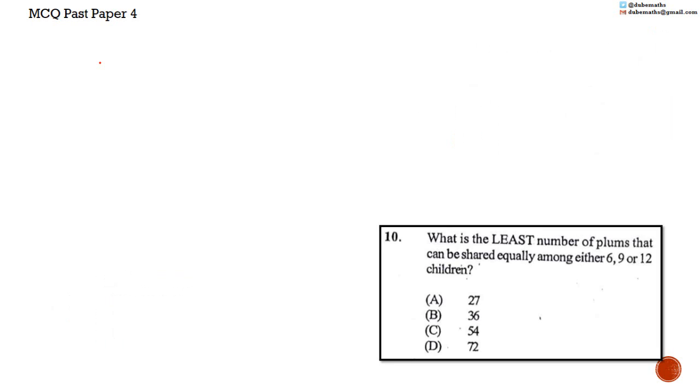Number 10. What is the least number of plums that can be shared equally among either 6, 9 or 12 children? It may not be obvious, but this question is asking for the LCM, the lowest common multiple.